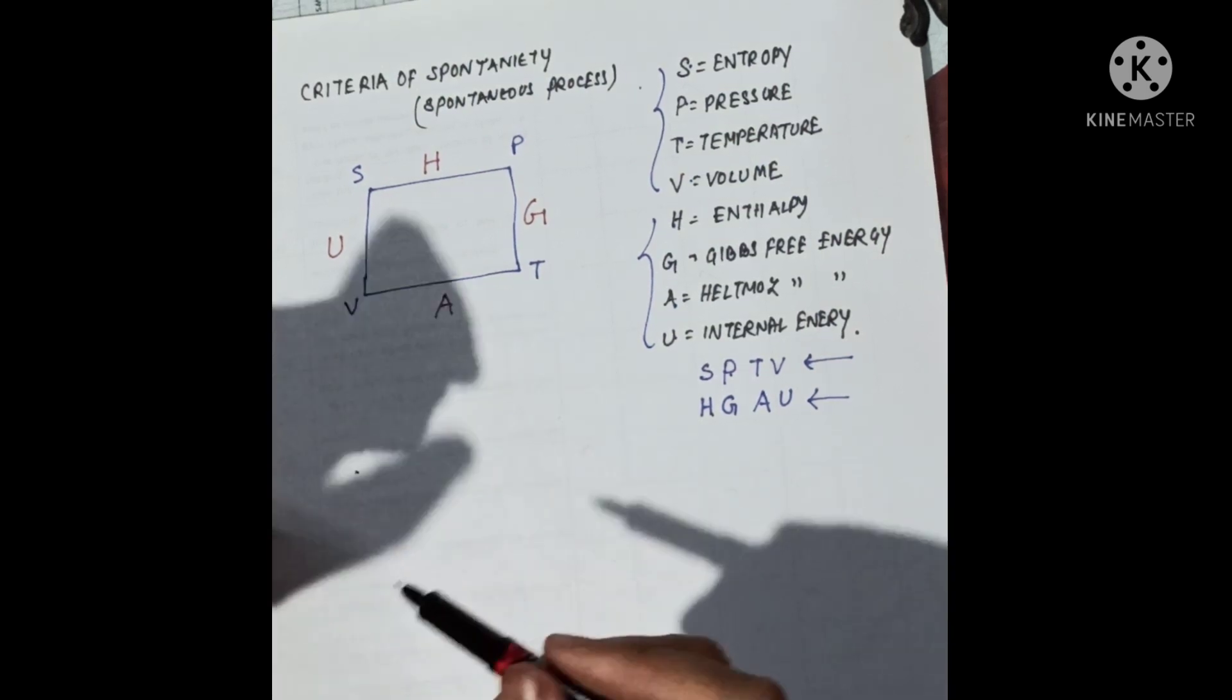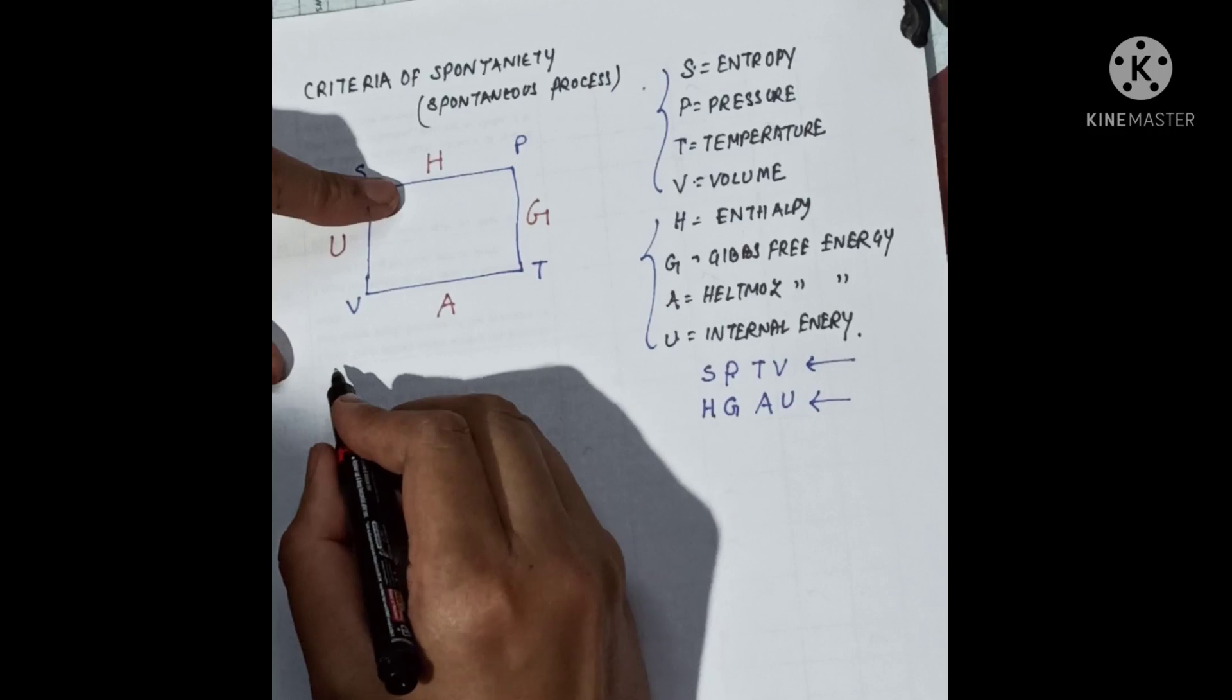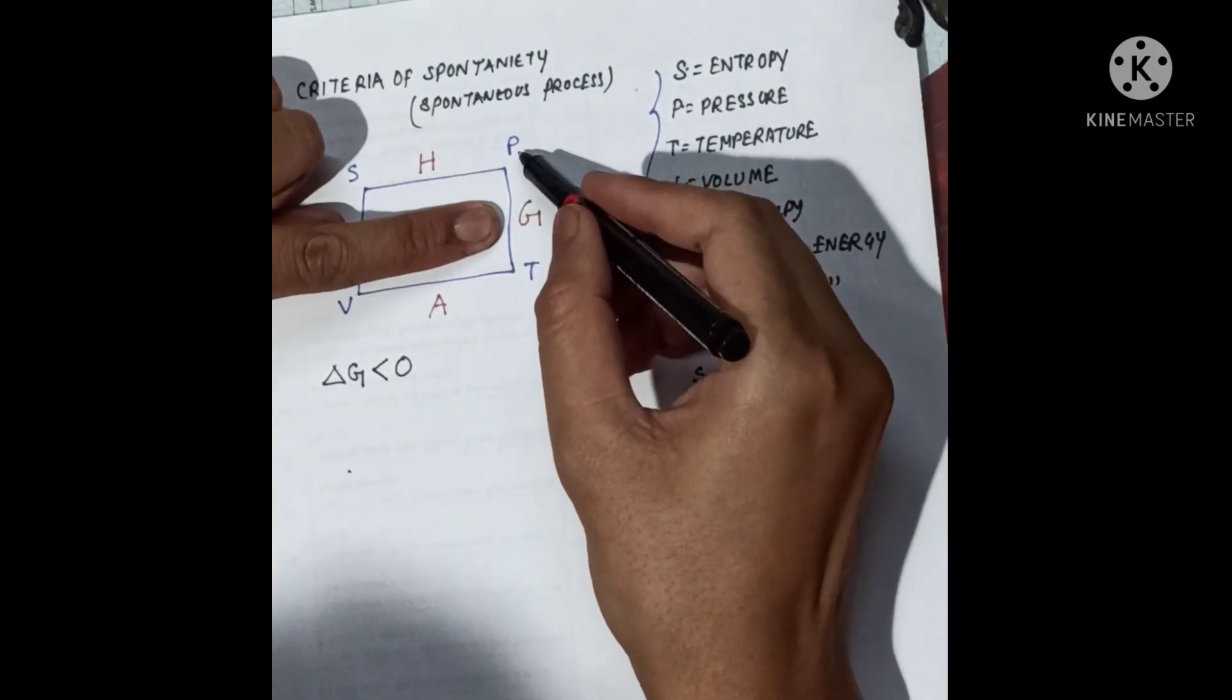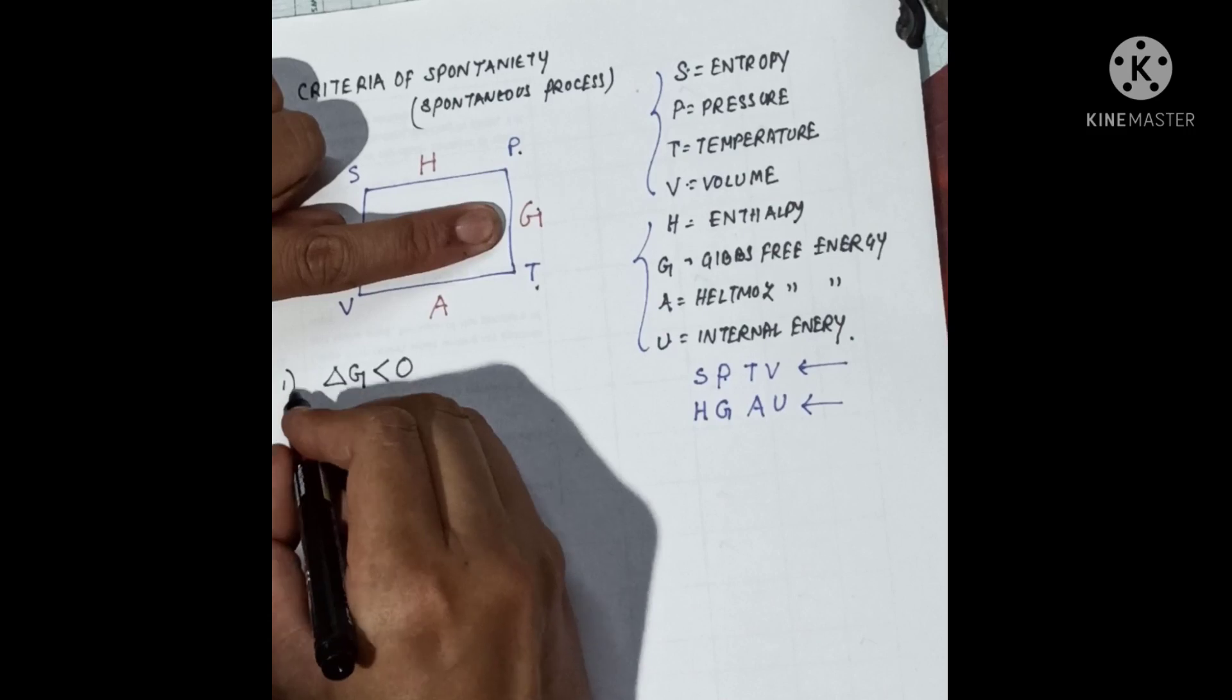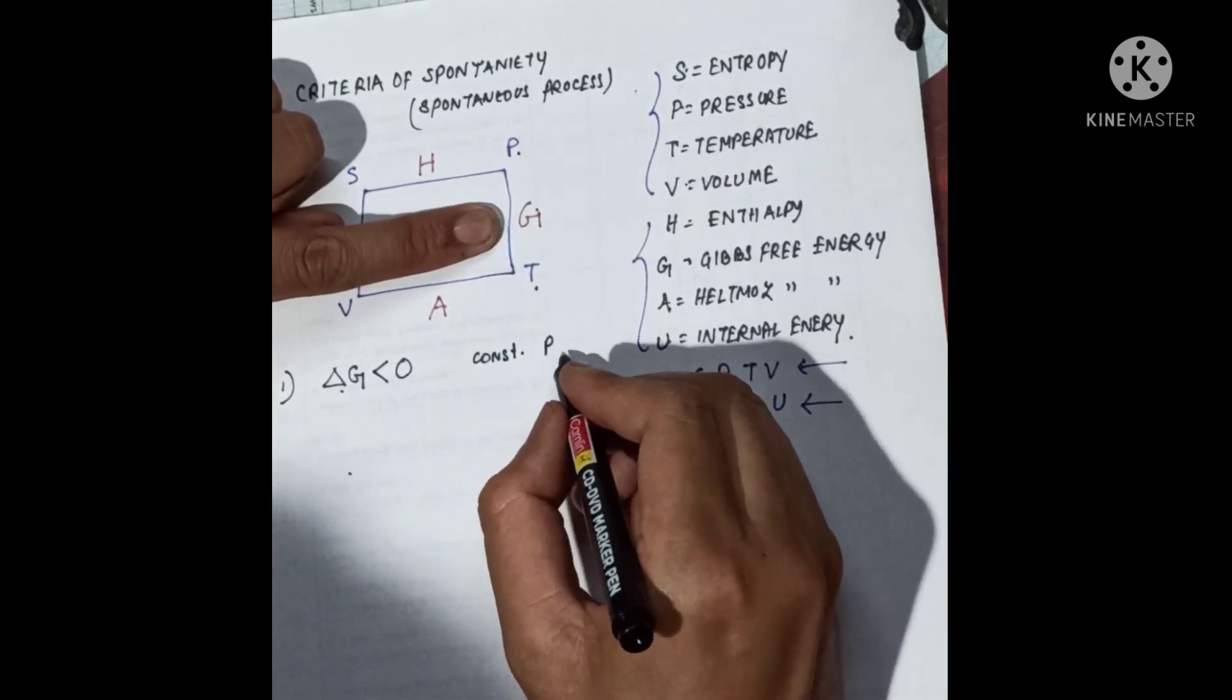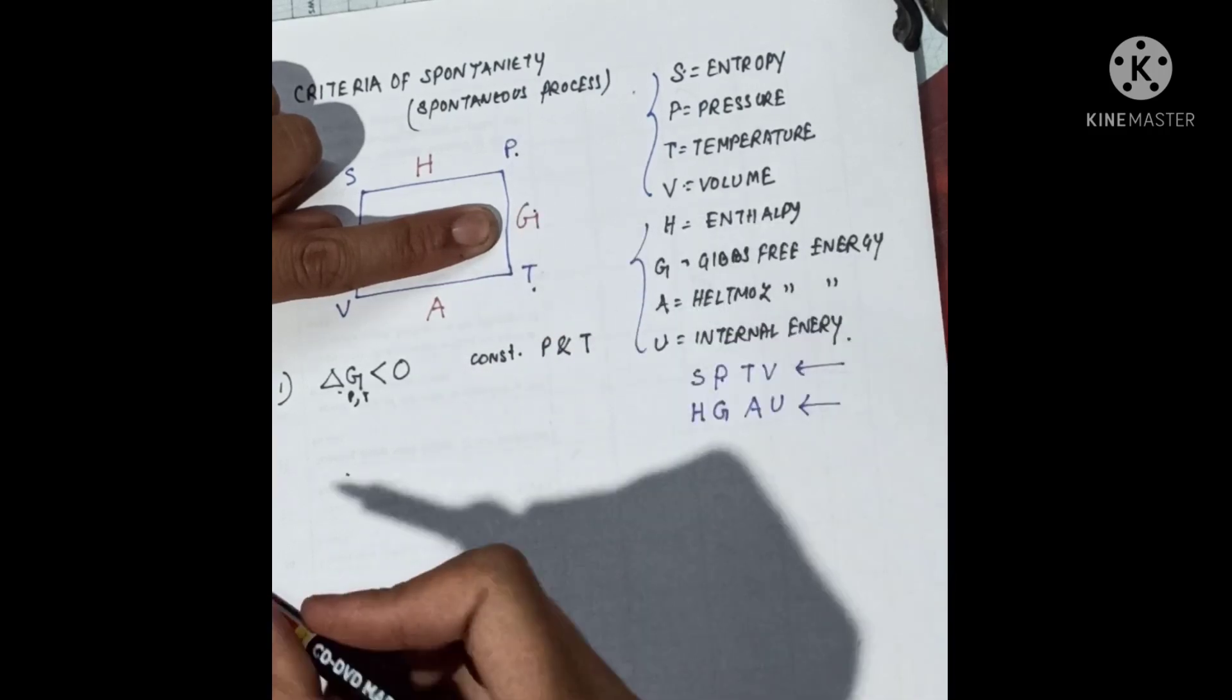After this, with the help of this diagram, we'll predict the conditions for a spontaneous process. I'll start from Z. Delta Z less than zero. This condition is satisfied at constant P and T. G lies between P and T. So the first condition for a spontaneous process is delta Z less than zero at constant P and T.